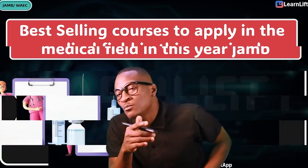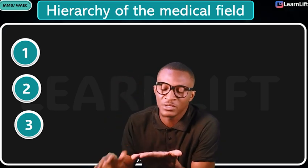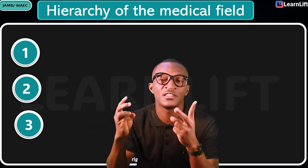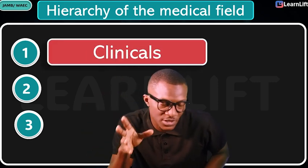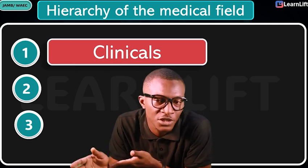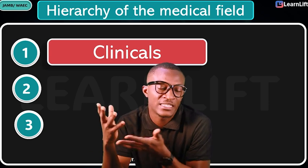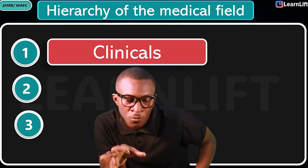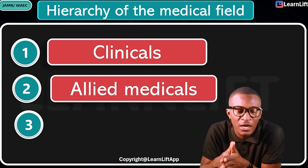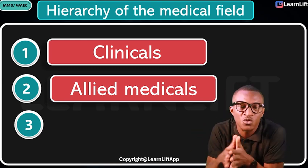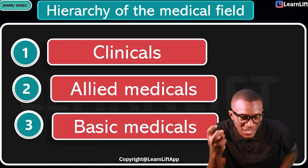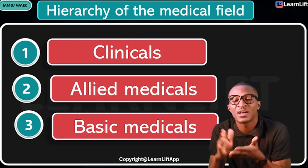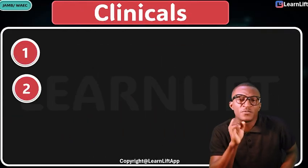Let's get to class. The medical field is broken down into three levels. Number one, we call them the clinicals - this has to do with pure clinical theories and clinical attention. Number two, we call them the allied medicals - those that work with the clinicals. And number three, we have what we call the basic medicals. So we have the clinicals, the allied medicals, and the basic medicals.